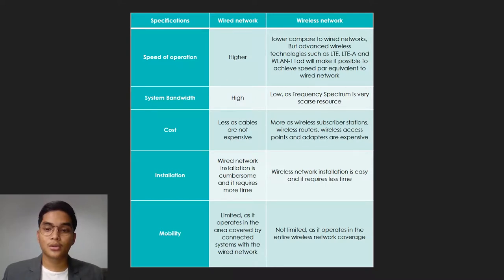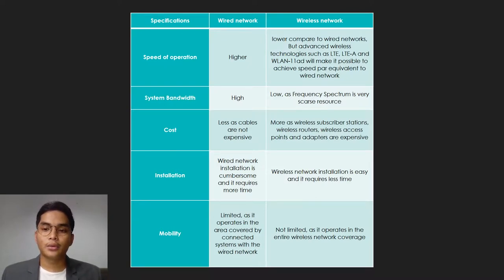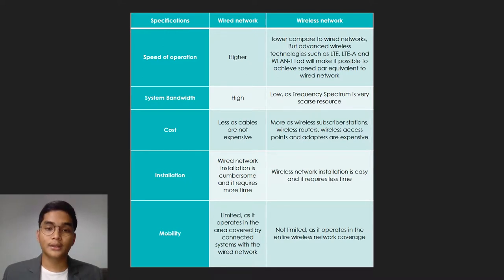The third parameter is cost. Wired network cost is less as cables are not expensive. In the wireless network, cost is more — wireless subscriber stations, wireless routers, wireless access points, and adapters are expensive. The fourth parameter is installation. Wired network installation is cumbersome and it requires more time. Wireless network installation is easy and requires less time. The fifth parameter is mobility. Wired network mobility is limited as it operates in the area covered by the connected system. Wireless network mobility is not limited as it covers the entire wireless network coverage area.